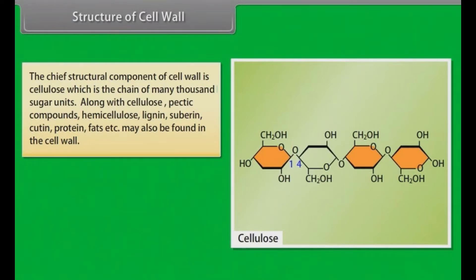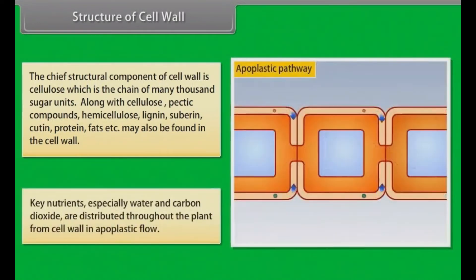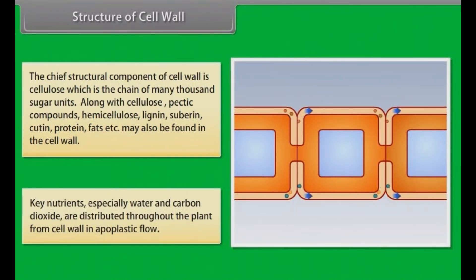The chief structural component of the cell wall is cellulose, which is a chain of many thousand sugar units. Along with cellulose, pectic compounds, hemicellulose, lignin, suberin, cutin, protein, and fats may also be found in the cell wall. Key nutrients, especially water and carbon dioxide, are distributed throughout the plant from the cell wall in apoplastic flow.